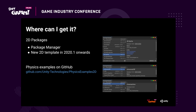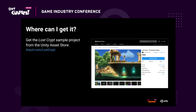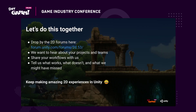Now let's talk about where you can get your hands on all of these features and samples. For all of the 2D packages, as well as the Universal Render Pipeline and Cinemachine, you can get these from Package Manager. From 2020.1 onwards, the new 2D template will include all the verified 2D packages, so you won't even have to do anything. We recently re-released our physics samples project on GitHub, and the Lost Crypt sample project is available on the Unity Asset Store. Please drop by the 2D forums — the 2D team at Unity wants to hear about your projects. Share your workflows with us, tell us what works, what doesn't, and what we might have missed. Keep making amazing 2D experiences in Unity. Thank you.